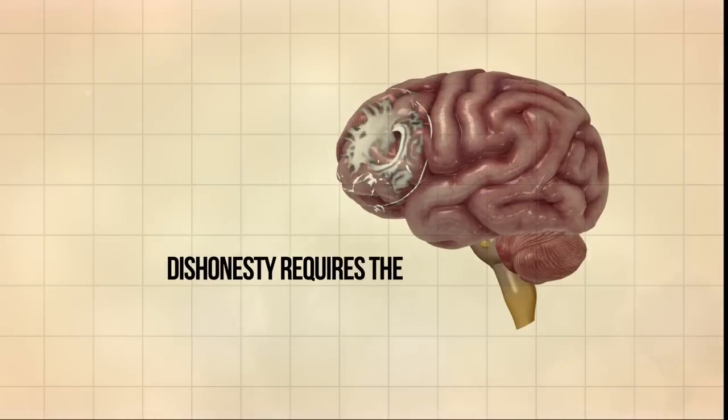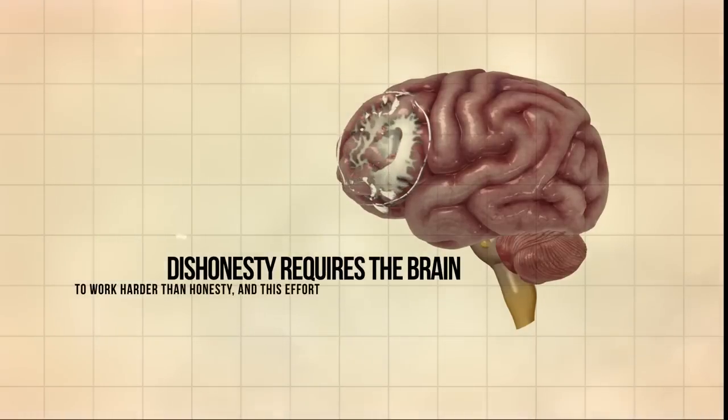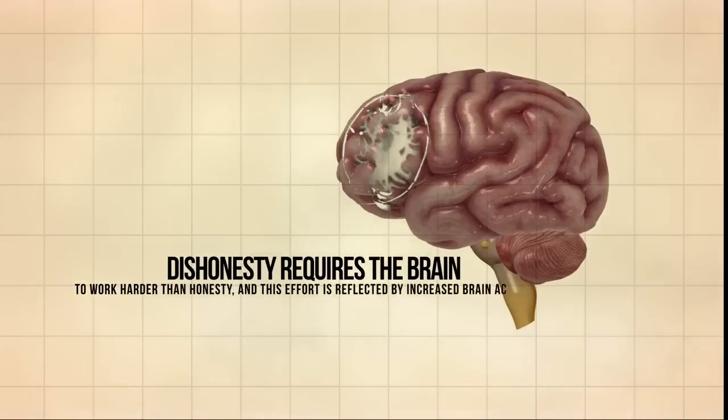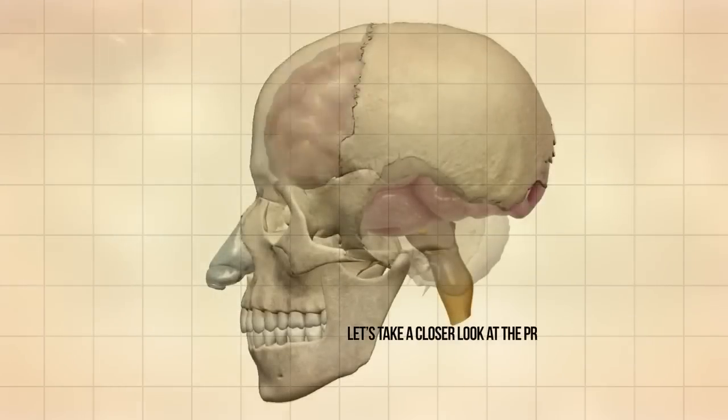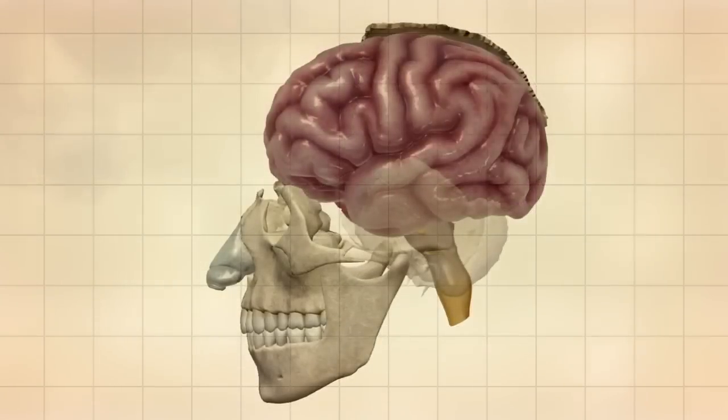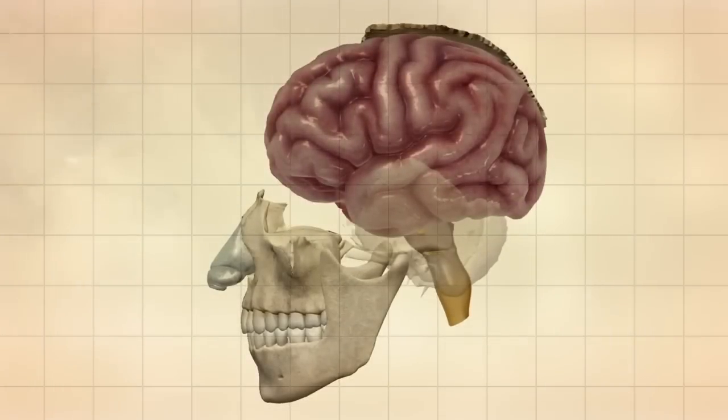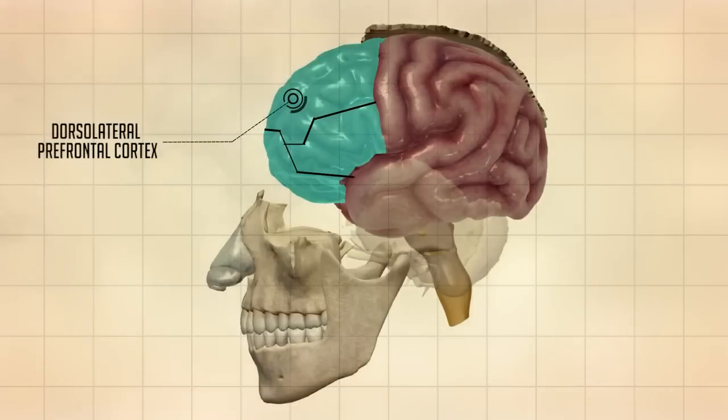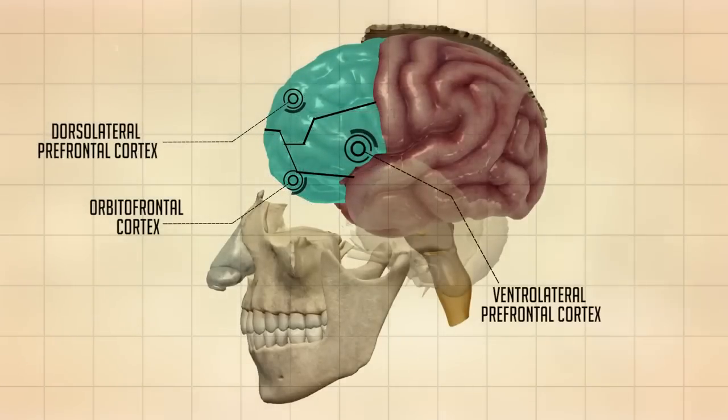Dishonesty requires the brain to work harder than honesty, and this effort is reflected by increased brain activity. Let's take a closer look at the prefrontal cortex subdivisions. This area of the brain has been divided into three main subdivisions known as the dorsolateral prefrontal cortex, orbitofrontal cortex, and the ventrolateral prefrontal cortex.